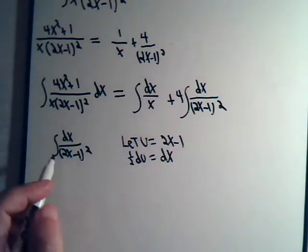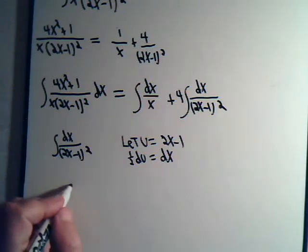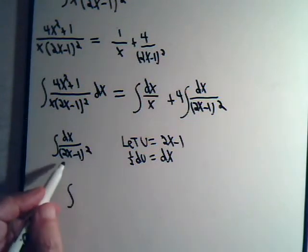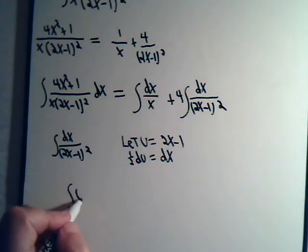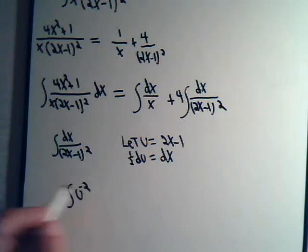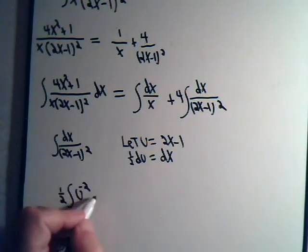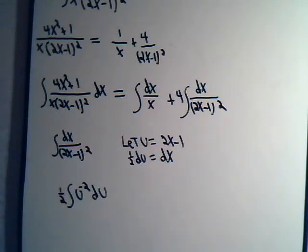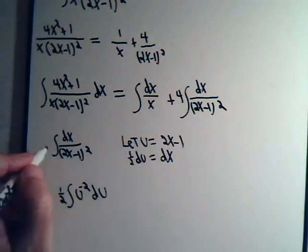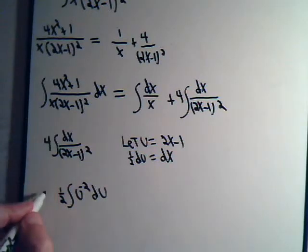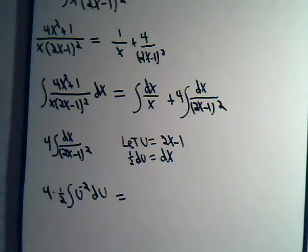So 1 half of du will equal dx. So this integral here becomes the integral of, this is u squared. Take it upstairs. It's u to the minus 2. And dx is 1 half of du. And up here we had 4 times that integral. So we'll have 4 times this.